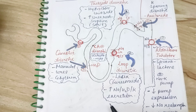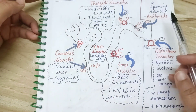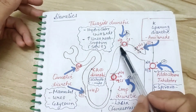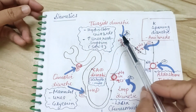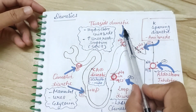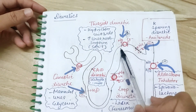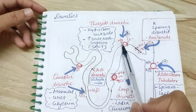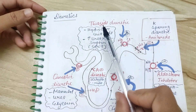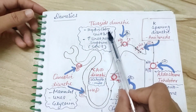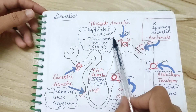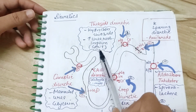Moving toward the DCT, there is a sodium-chloride co-transporter, and thiazide diuretics act on that. This channel is inhibited by thiazide diuretics. The example is hydrochlorothiazide. They also increase uric acid reabsorption and can precipitate gout.